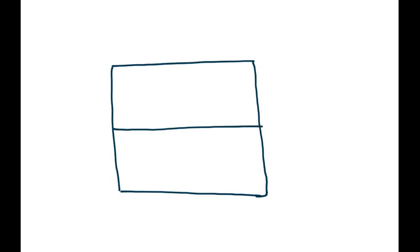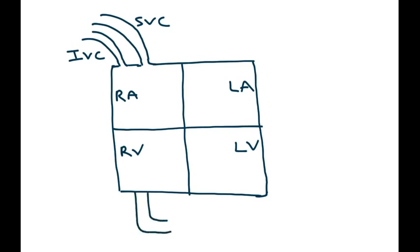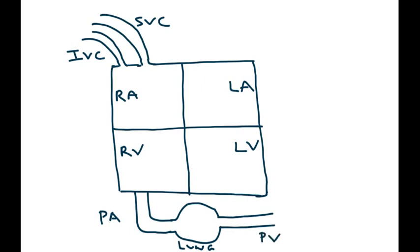The first thing I will do is draw the four chambers. This is the right atrium, this is the right ventricle, this is the left ventricle, and this is the left atrium. Draining into this side are the superior vena cava and the inferior vena cava. Draining out from the right ventricle is a blood vessel known as the pulmonary artery, and that goes to the lung. Coming out from the lung are the pulmonary veins that go all the way back to the left atrium.